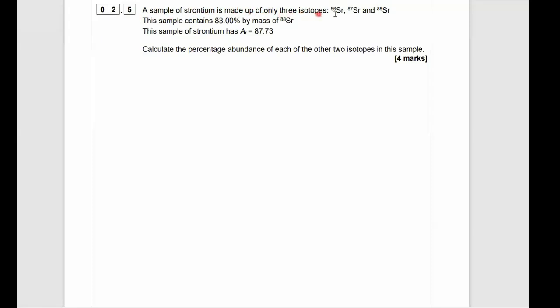Okay, 2.5. A sample of strontium is made up of only three isotopes, SR86, SR87, and SR88. This sample contains 83% by mass of SR88. This sample of strontium has an AR of 87.73. Calculate the percentage abundance of each of the other two isotopes in this sample.